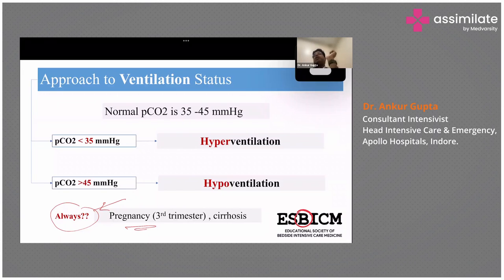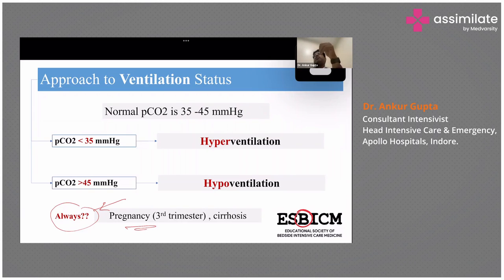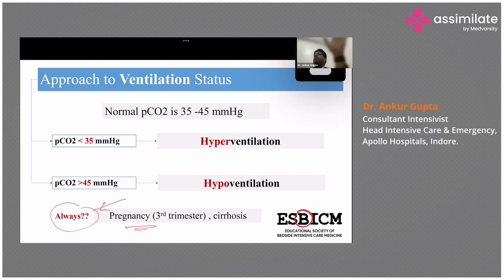Ventilation status is important. Suppose a patient who was having pneumonia or any other lung pathology was on oxygen and now PCO2 has started rising slightly — it was 35, now it is 40, now it has come to 50. That means hypoventilation has started, the patient is getting fatigued, and you need to intervene. So ventilation status must be taken in context of the clinical scenario.